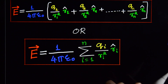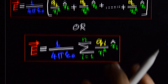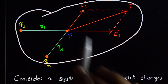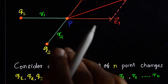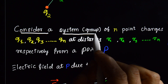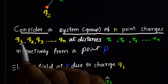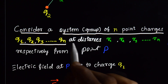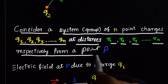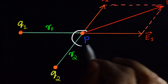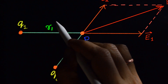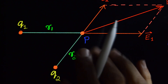How do we solve this example? First, draw the diagram properly. Consider a system of n point charges q1, q2, q3 up to qn at distances r1, r2, r3 up to rn respectively from point P.